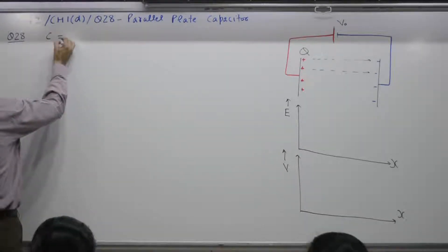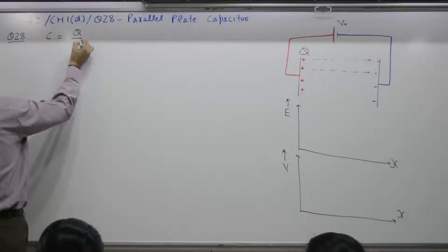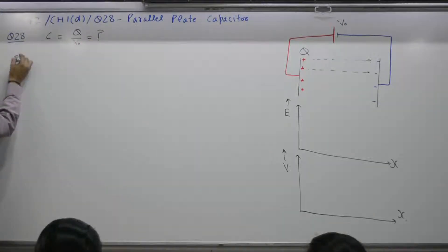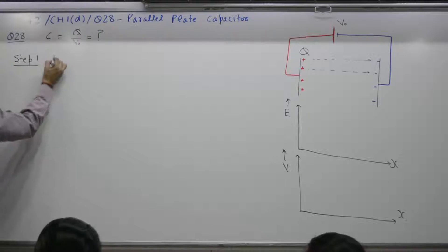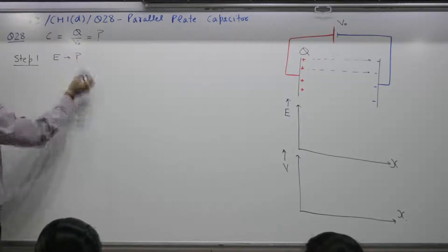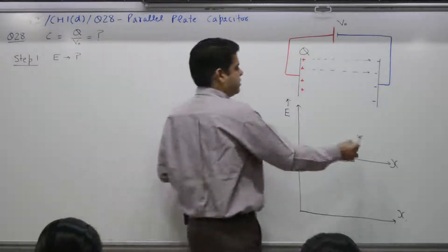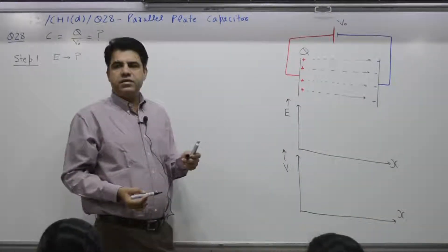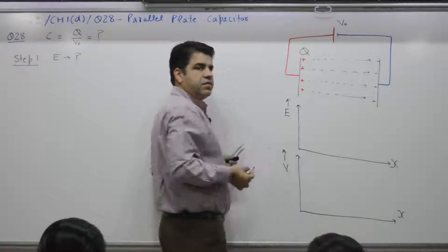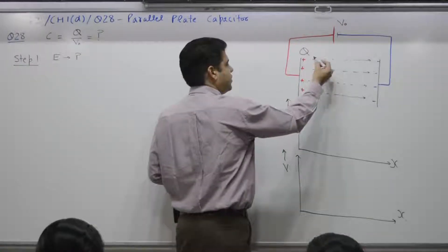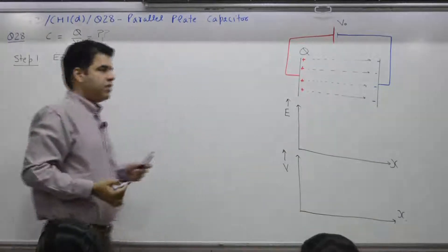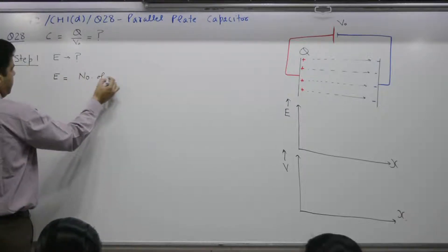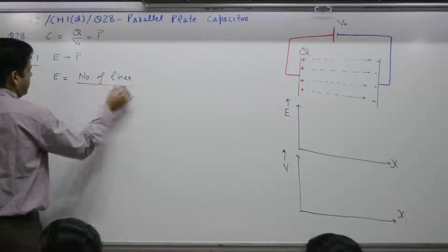Our purpose is to find out capacitance, which means charge per unit voltage. Step one: we have to find out E, the electric field intensity — how E varies with distance. E represents the number of lines per unit area. These lines are parallel, neither converging nor diverging, so the number of lines per unit area remains the same. Therefore E is constant — E equals the number of lines per unit area.